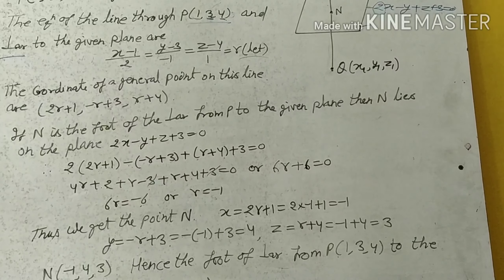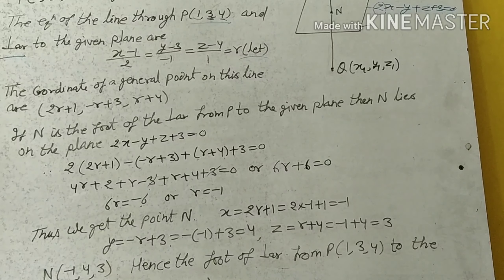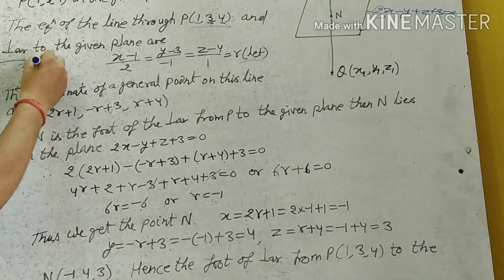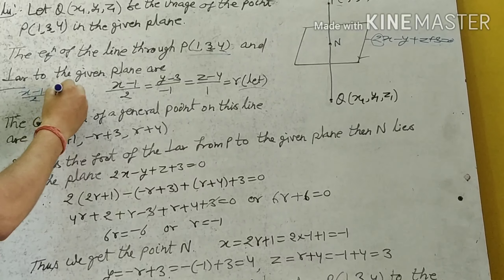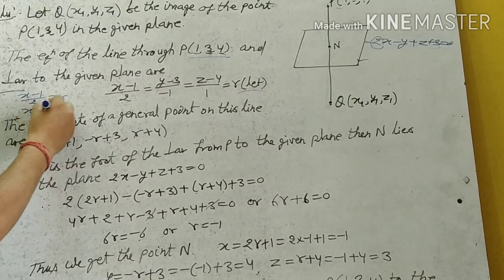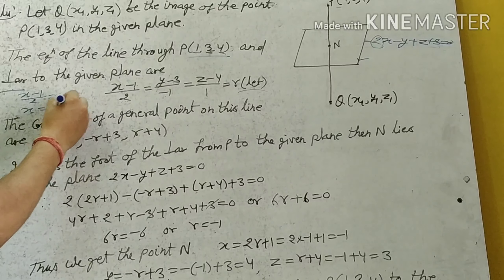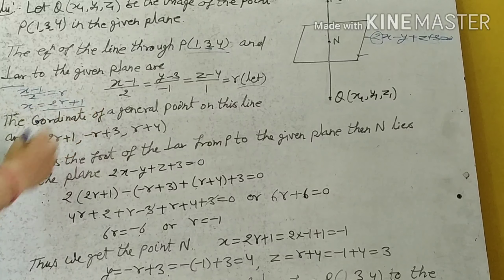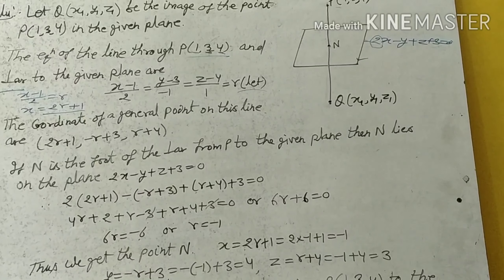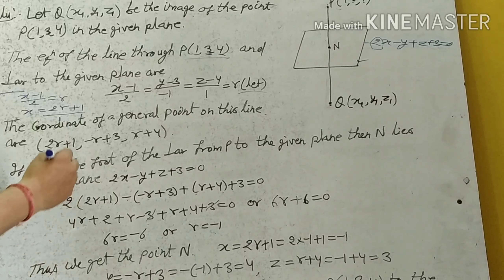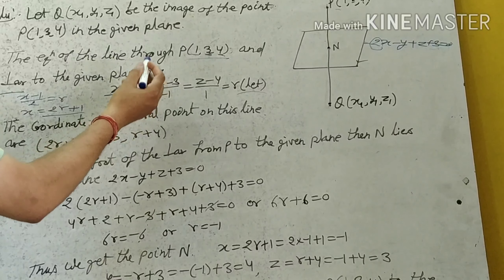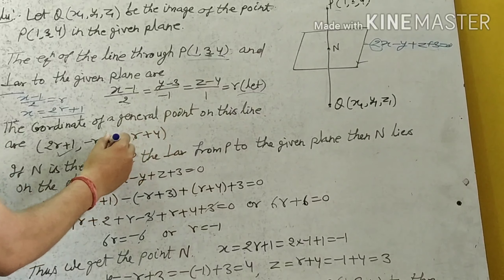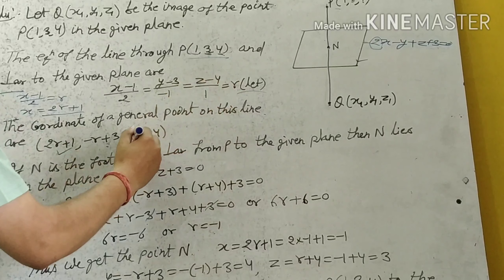From this line, the coordinates of a general point are: x equal to 2r plus 1, y equal to minus r plus 3, and z equal to r plus 4.